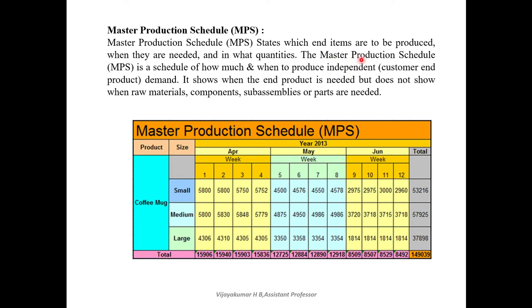The master production schedule is a schedule of how much and when to produce the independent demand, based on customer orders. It shows when the end product is needed but does not show when raw materials, components, sub-assemblies, or parts are needed. It only gives the total number of quantities — the final products required in a particular week.